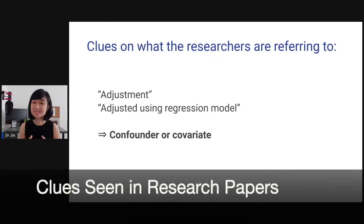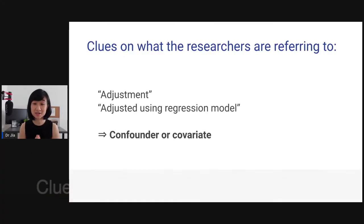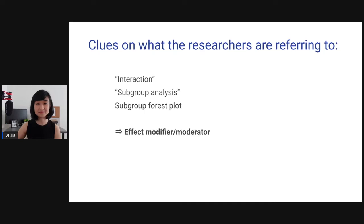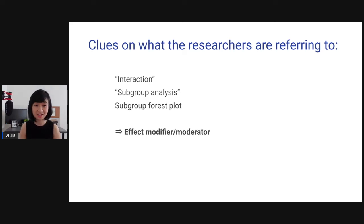These are the clues on what researchers are referring to. When you see the word 'adjustment' or 'adjusted' using a regression model, it means they are talking about a confounder or covariate. When you see the word 'interaction,' subgroup analysis, or a subgroup forest plot, they are talking about an effect modifier or moderator.